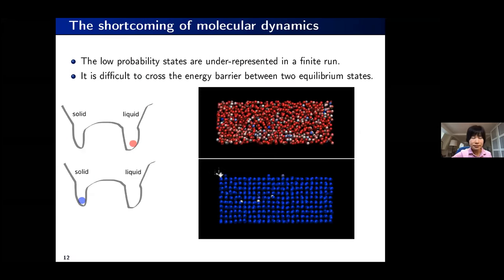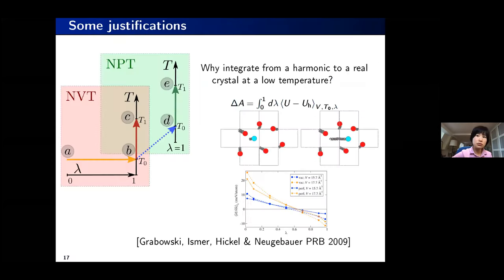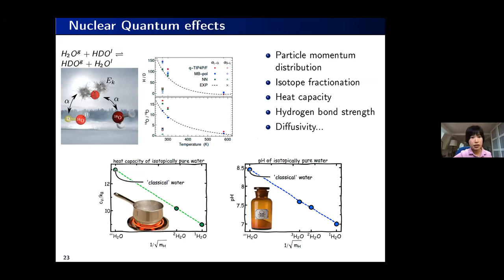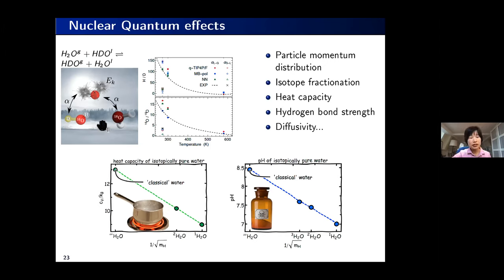Back to where we were. So far I have talked about the classical system — the classical free energy. The classical term refers to the fact that we assume our nuclei are classical particles, point particles characterized by their center of mass. However, in reality many nuclei, especially light ones such as hydrogen, helium, and lithium, are sufficiently light that the classical particle treatment breaks down. This is called nuclear quantum effects, which affects particle momentum distribution, isotope fractionation, pH, heat capacity, diffusivity, and many other properties.